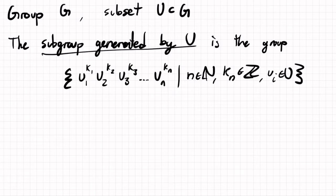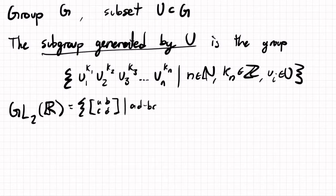Let's do a few examples. Take a subgroup of GL₂(ℝ), which is the set of 2×2 matrices where ad - bc ≠ 0, making the matrix invertible.